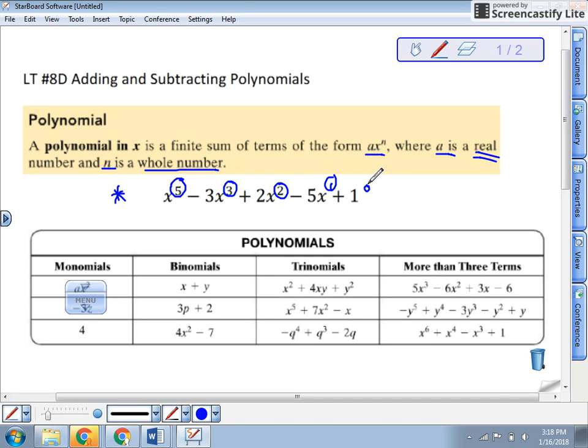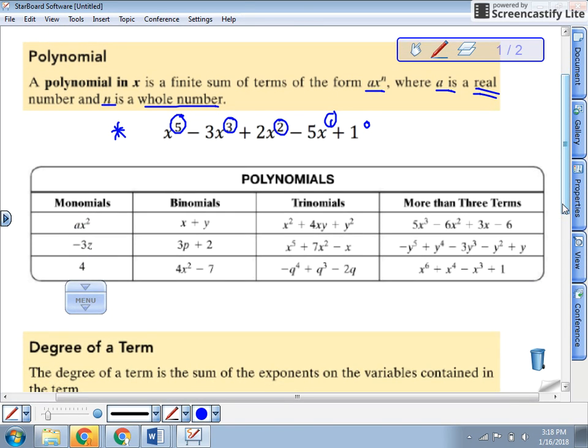Now, some polynomials have special names depending on how many terms. Remember, terms are separated by a plus or a minus sign. So monomial means one term. Notice, no plus or minus signs. The negative sign in front doesn't really count there.